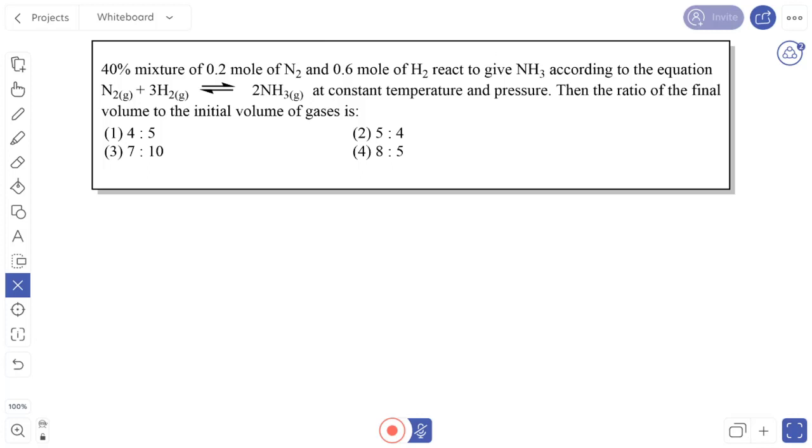Hello everyone, today we will solve this question. The question says 40% mixture of 0.2 mol nitrogen and 0.6 mol hydrogen react to give ammonia according to the equation at constant temperature and pressure. Then the ratio of the final volume to the initial volume of gases is: